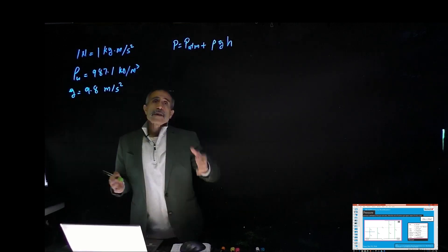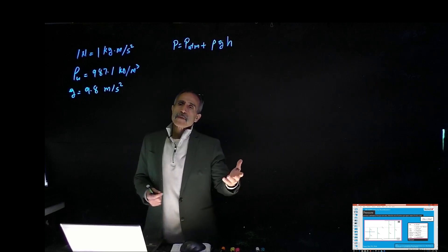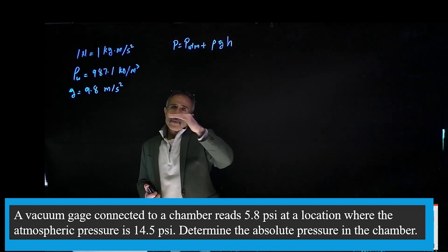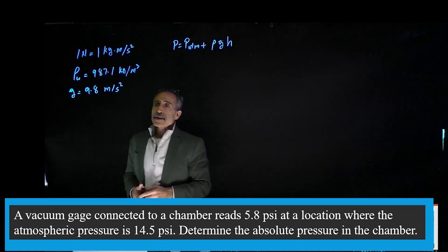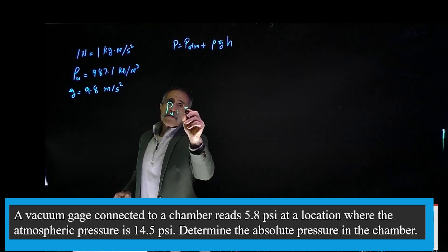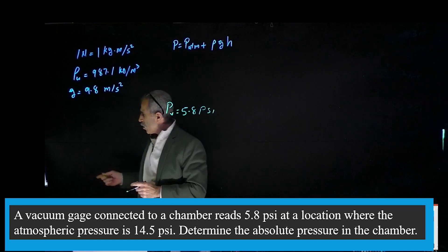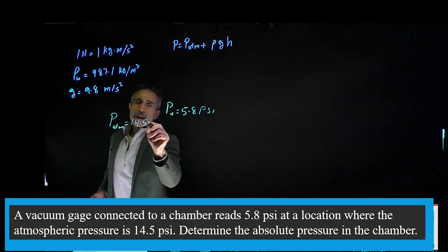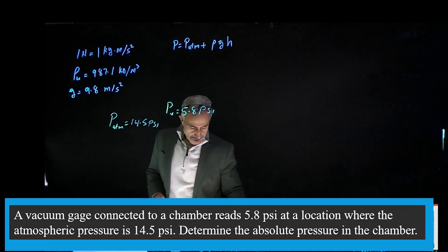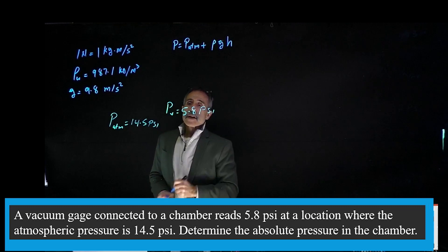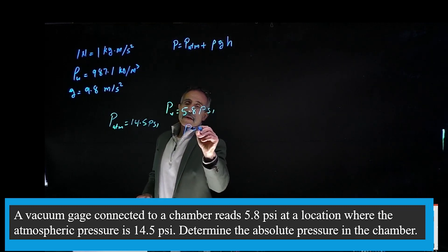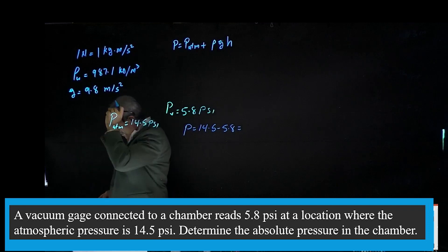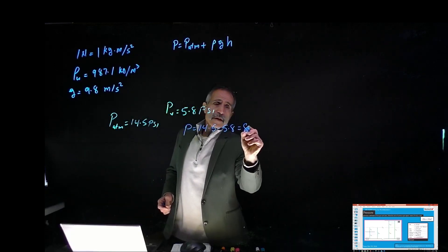Let's look at another example. The first time we had pressure above the atmospheric pressure, this time it says a vacuum gauge. Vacuum is anything below atmospheric pressure, whatever your local pressure is. In this example, the vacuum pressure is 5.8 psi below the atmospheric pressure. The local pressure is 14.5 psi. So what is the absolute pressure? The absolute pressure is going to be 14.5 minus 5.8, which gives me 8.7 psi.